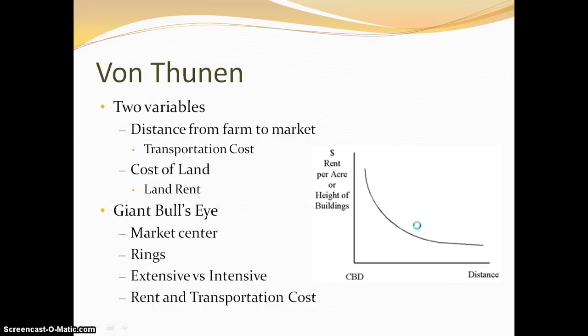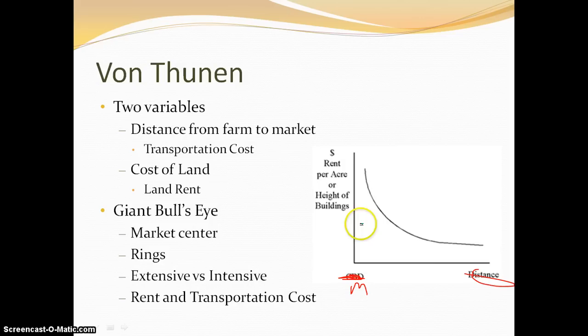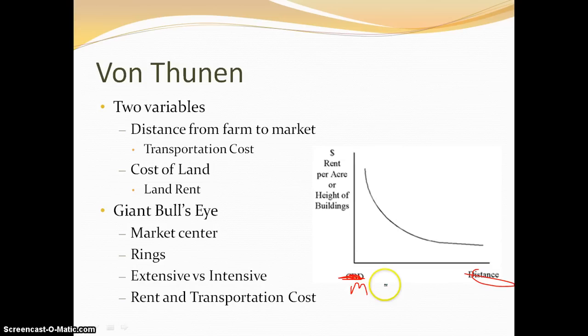You're going to see the bid-rent curve again when you get to urban geography, but for right now we're looking at it in terms of agriculture. Instead of CBD — Central Business District — think of it as the marketplace M. The further you get away from the marketplace, the cheaper land is going to be. The closer you get to the marketplace, the more expensive land is going to be. So you want to try to lower production costs by going further away, but you don't want to go so far that transportation costs are too high. This relationship between transportation costs and land rent creates that perfect bullseye pattern, moving out in successive rings.